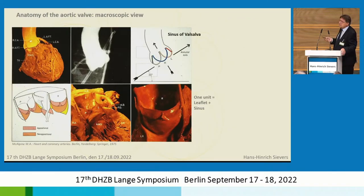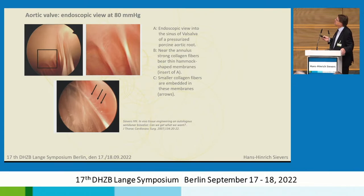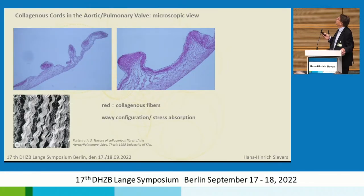But if everything works well, we get the aortic valve — you know this valve — and this is one leaflet, and it looks very simple, like a membrane of collagen. But if we go a little bit further into it, as an endoscopic view at 80 mmHg, we see the commissure, two leaflets, and the insert shows that there are strong collagenous fibers connected with the hammock-shaped membranes. This microscopic view shows the strong fibers — the membrane looks like a suspension bridge. It's the same principle.